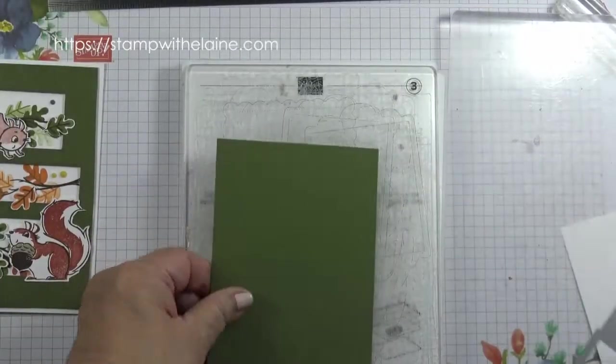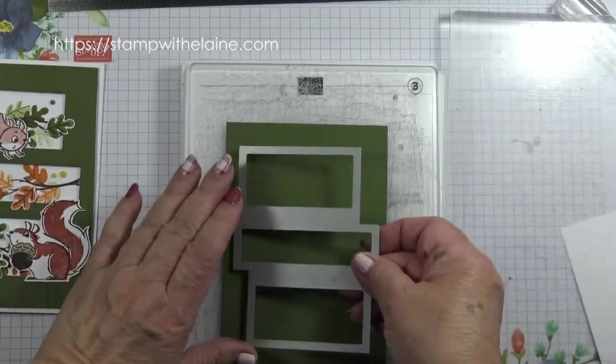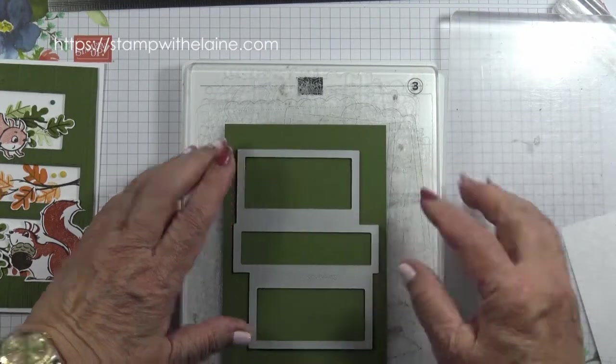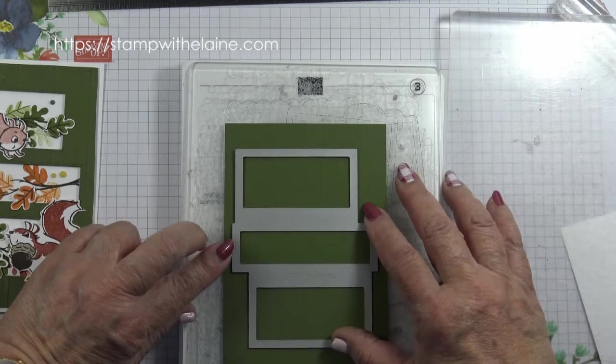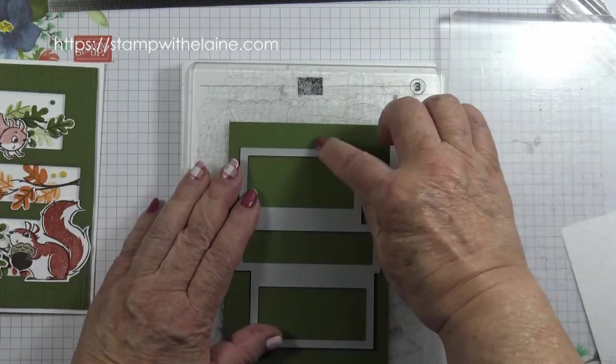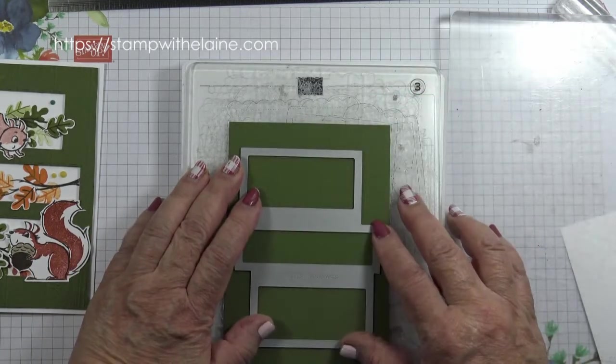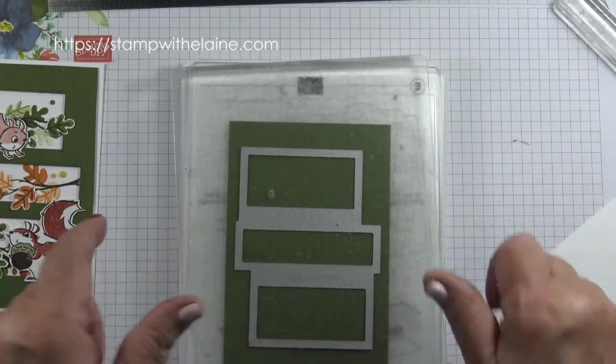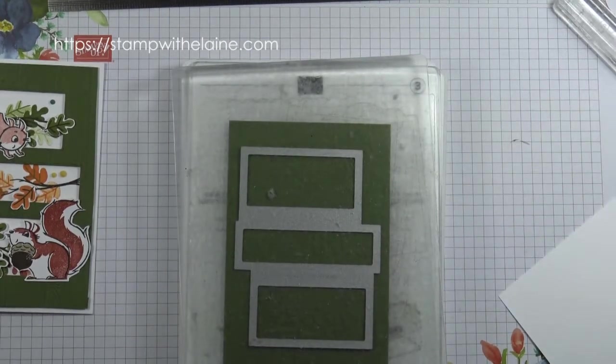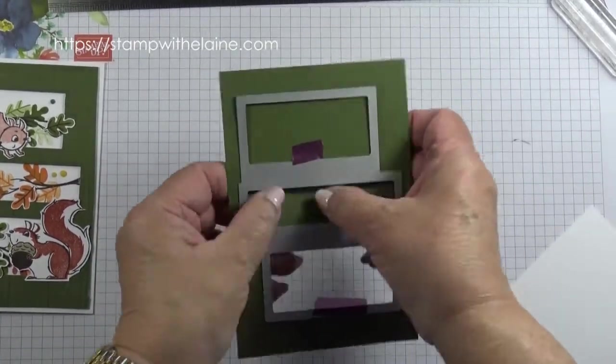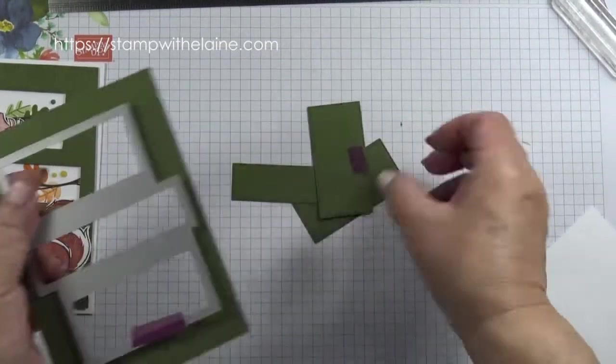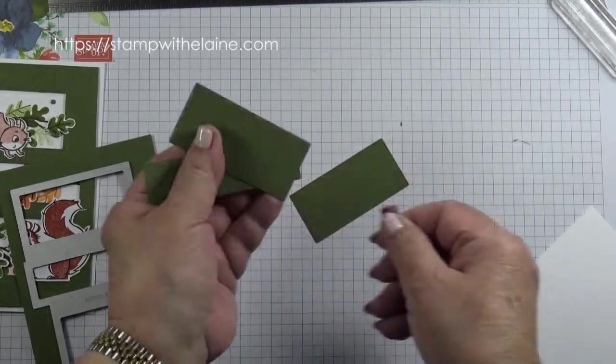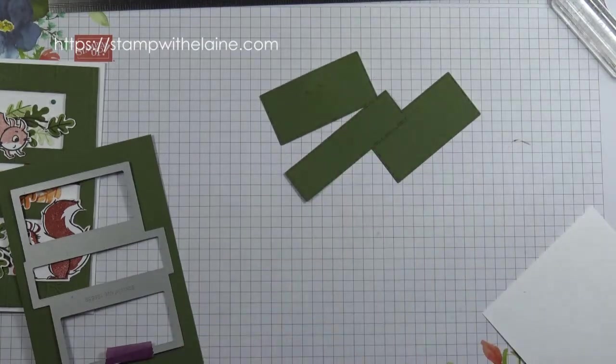Take your mossy meadow piece and place it on your cutting sandwich. Make sure that these two sides are equally distant and that you've got the same gap at the top and the bottom. Place your top cutting plate on top and you're ready to run it through the machine. So I'll do that off camera. So pop those out and remember you can use these as mats for something else so it's not wasted.